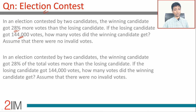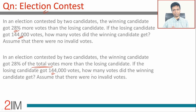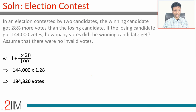Second question: an election contested by two candidates, the winning candidate got 28% of the total votes more than the losing candidate; the losing candidate got 144,000 votes. How many votes did the winning candidate get? This is a nice little difference between these two. Figure out that difference, think about what it means for the computation, then go on and try to solve.